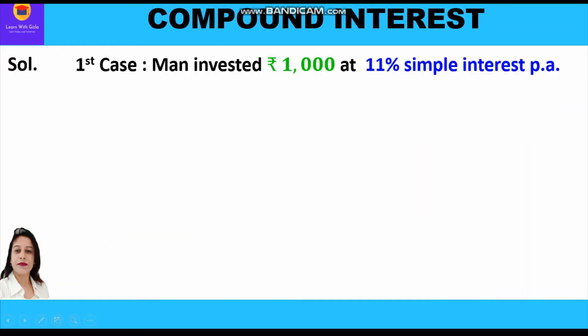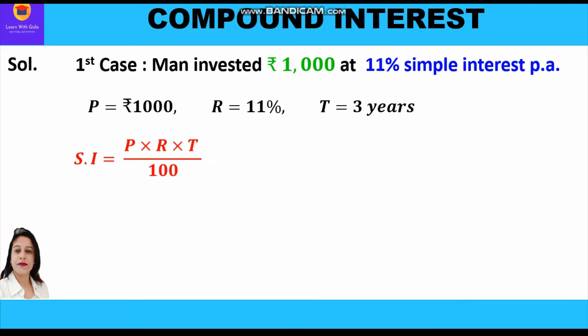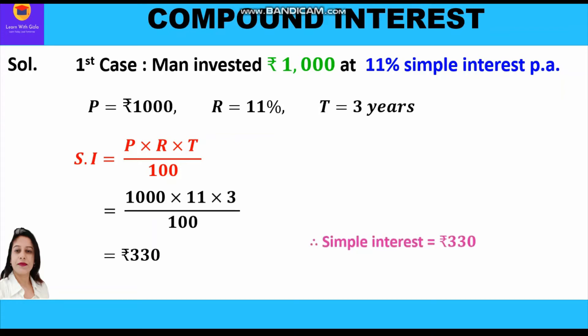Let us start with the first case where the man invested rupees 1000 at 11% simple interest per annum. Principal is rupees 1000, rate of interest is 11%, time period is three years. The simple interest formula is SI = P × R × T ÷ 100. Putting in the values: 1000 × 11 × 3 ÷ 100, which equals rupees 330. So simple interest is rupees 330.